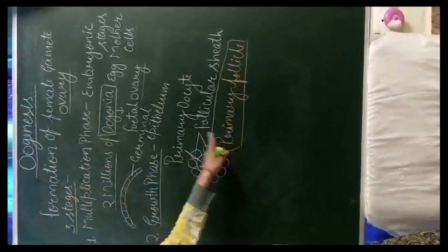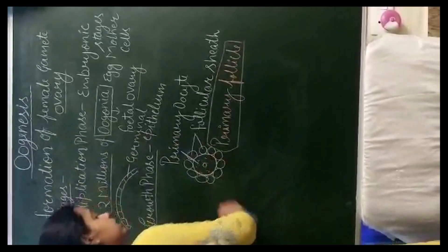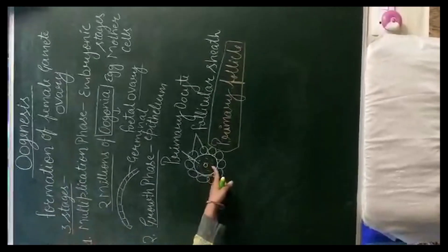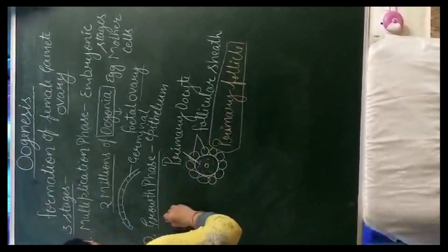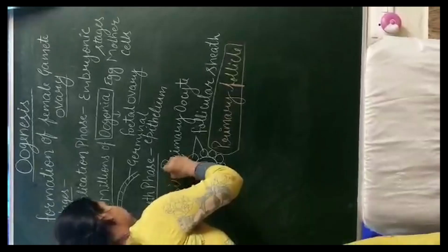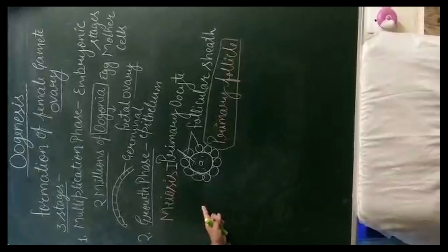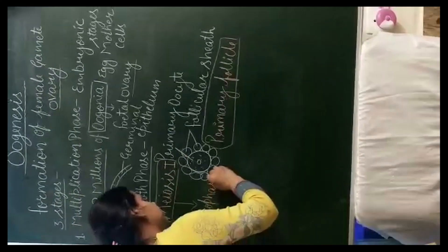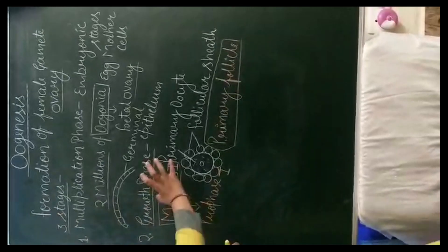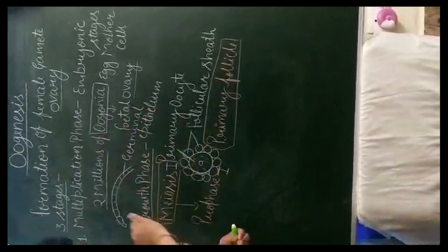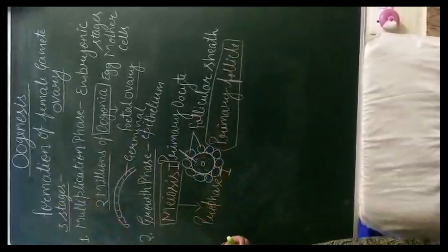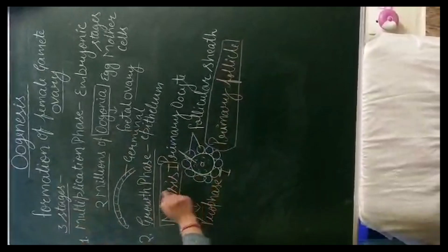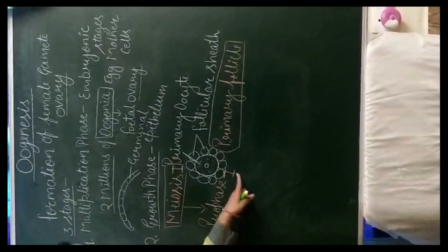A number of primary follicles are formed in the fetal ovary. During the growth phase, the primary oocyte inside the primary follicle undergoes meiosis 1 — it starts dividing by meiosis 1. But meiosis 1 is not completed; this division gets arrested at prophase 1. Primary follicles are formed in the fetal ovary, and the primary oocyte starts meiosis 1, but that division is arrested at prophase 1.